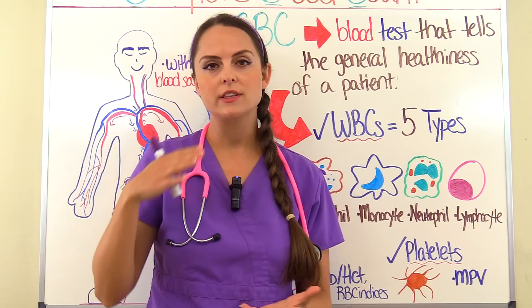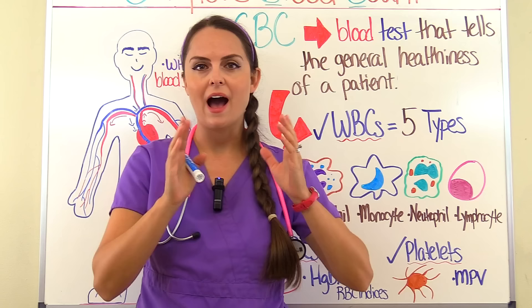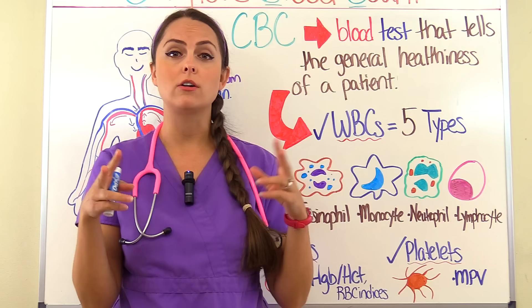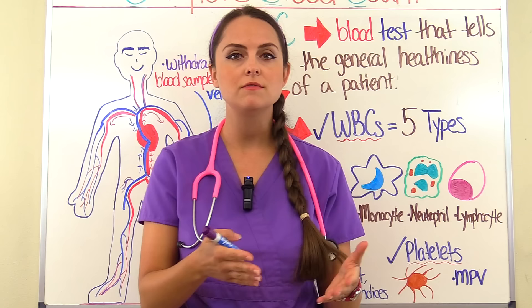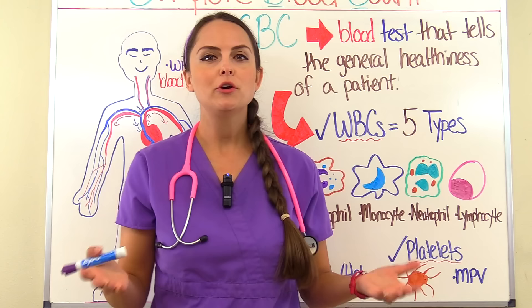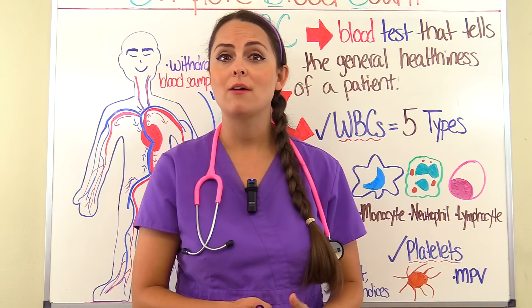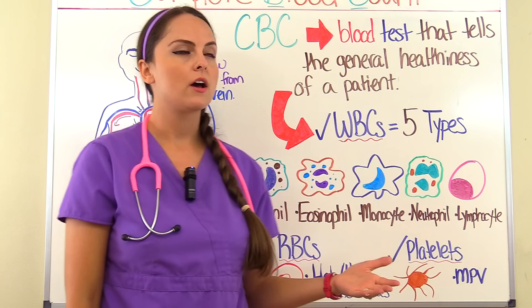Whenever you are answering questions on an exam, the lab results they throw at you are going to be noticeably abnormal — not something that falls so close to the low or high end of the normal range, because labs really vary on what they consider normal. One lab may say a normal result is 12.5 to 20 while another may say 15.5 to 20.5. Whenever you're working as a nurse and looking at a CBC result, you want to identify: if the platelet count is low, what's the patient at risk for? Or if the white blood count is high, what's going on with your patient?